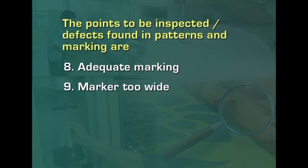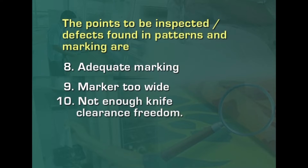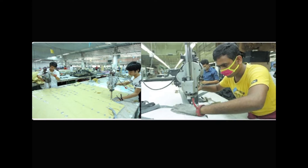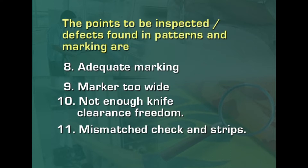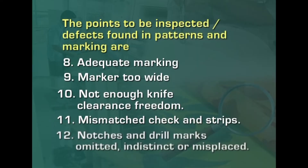Another defect is the marker becoming too wide, meaning garment parts at the edge of the lay are cut with bits missing. Not enough knife clearance freedom is also a defect, because the knife should have room to navigate corners and curves, so the operator should be able to maneuver the knife while cutting. Mismatched checks and stripes are also a defect — for stripes and checks, the patterns must match to get the desired effect. Notches and drill marks are sometimes omitted, indistinct, or misplaced and should also be corrected.